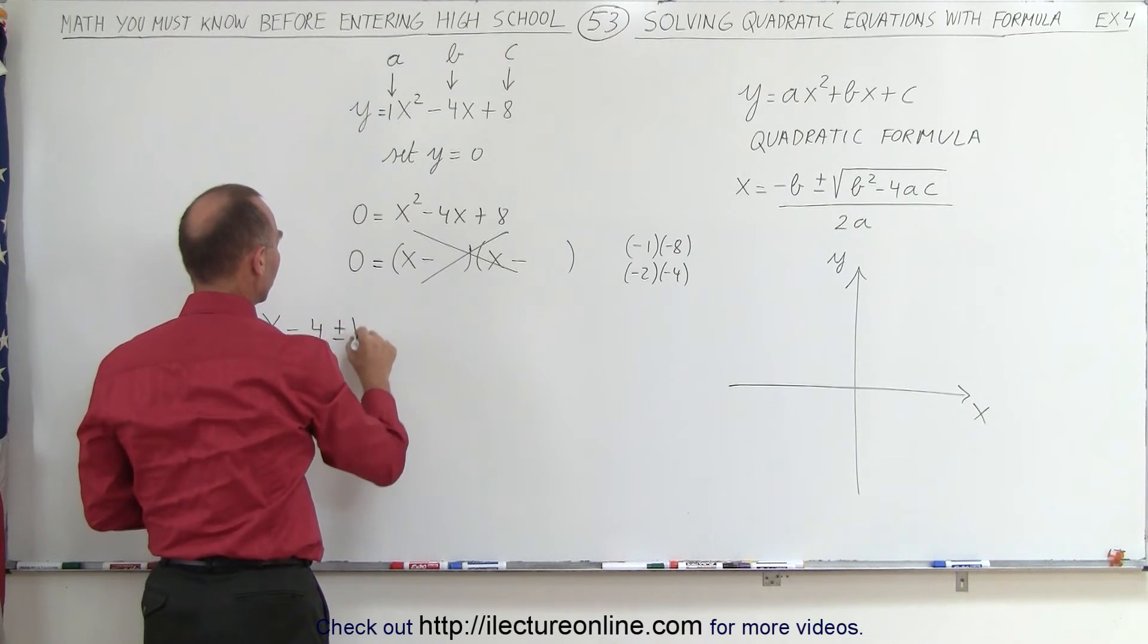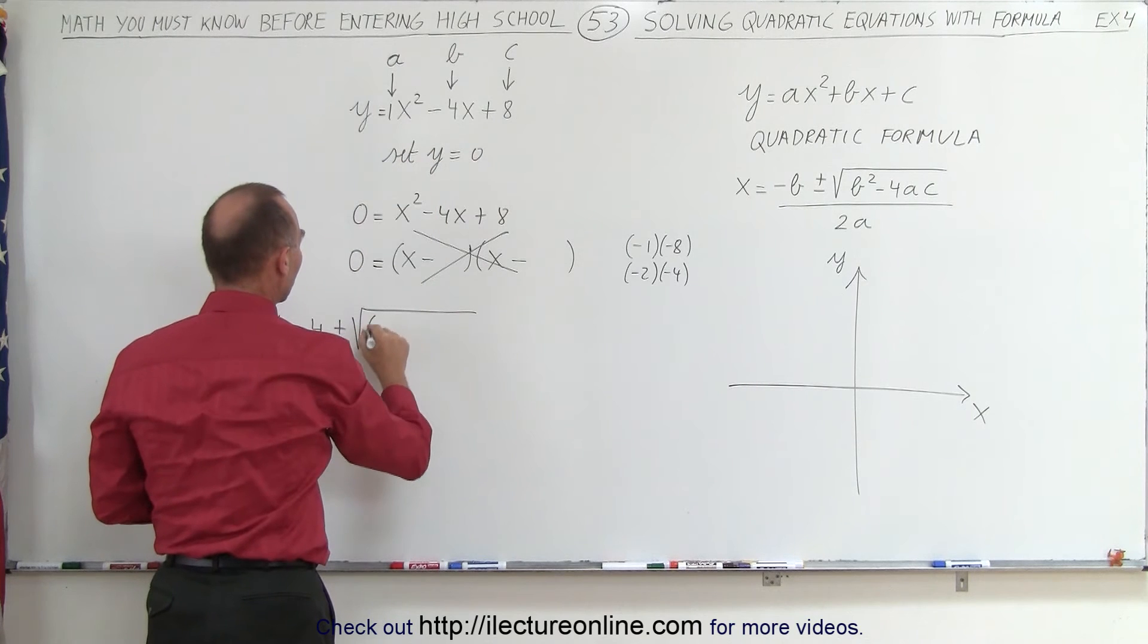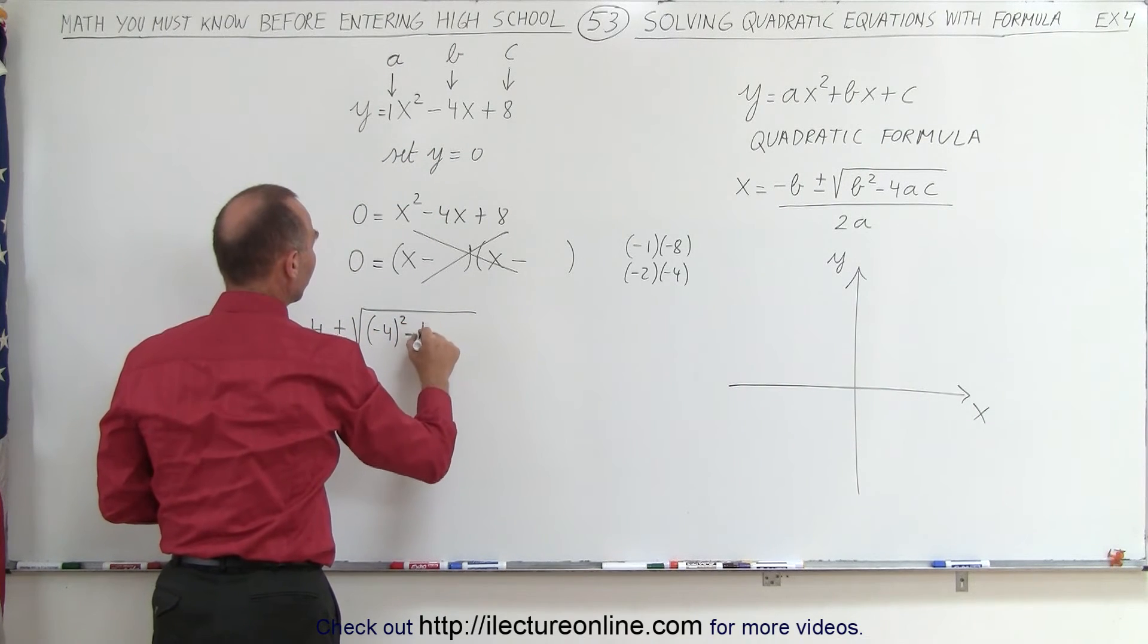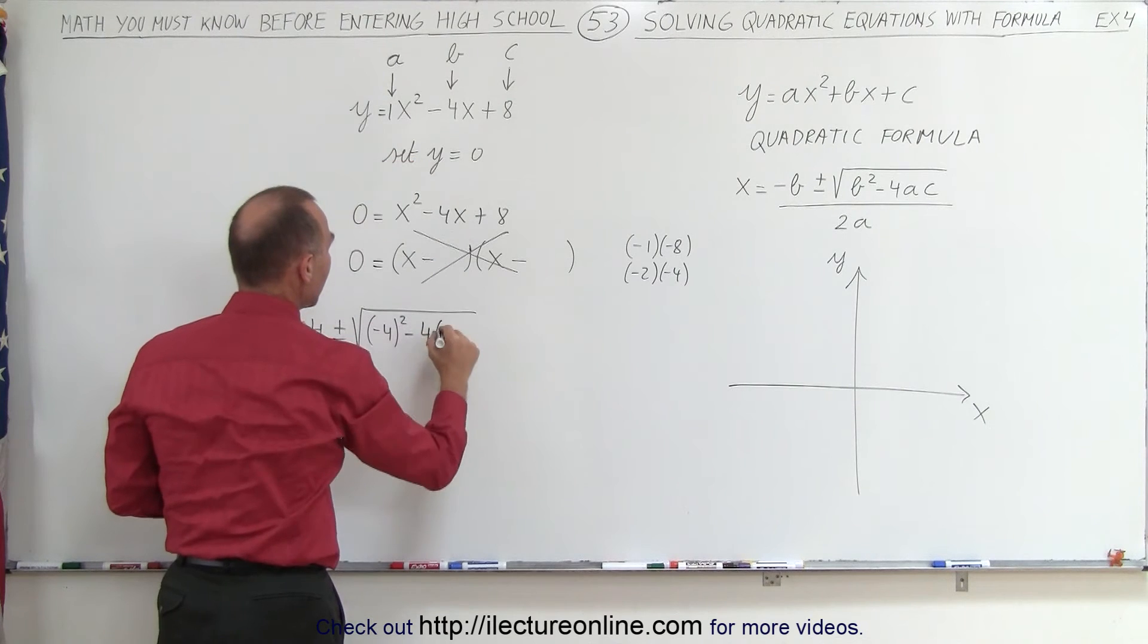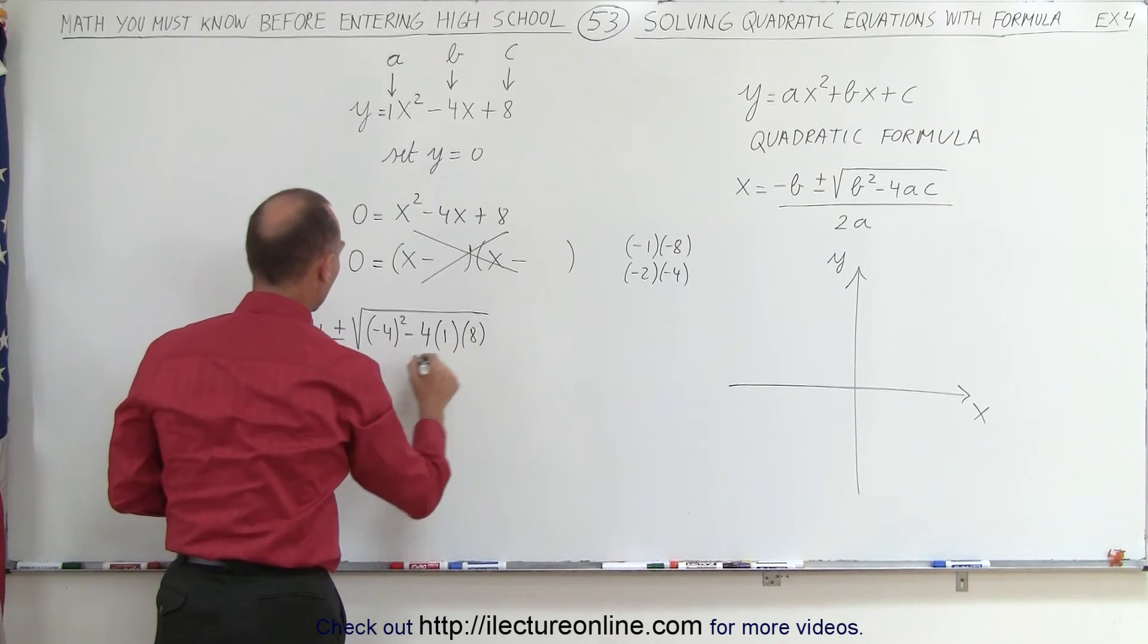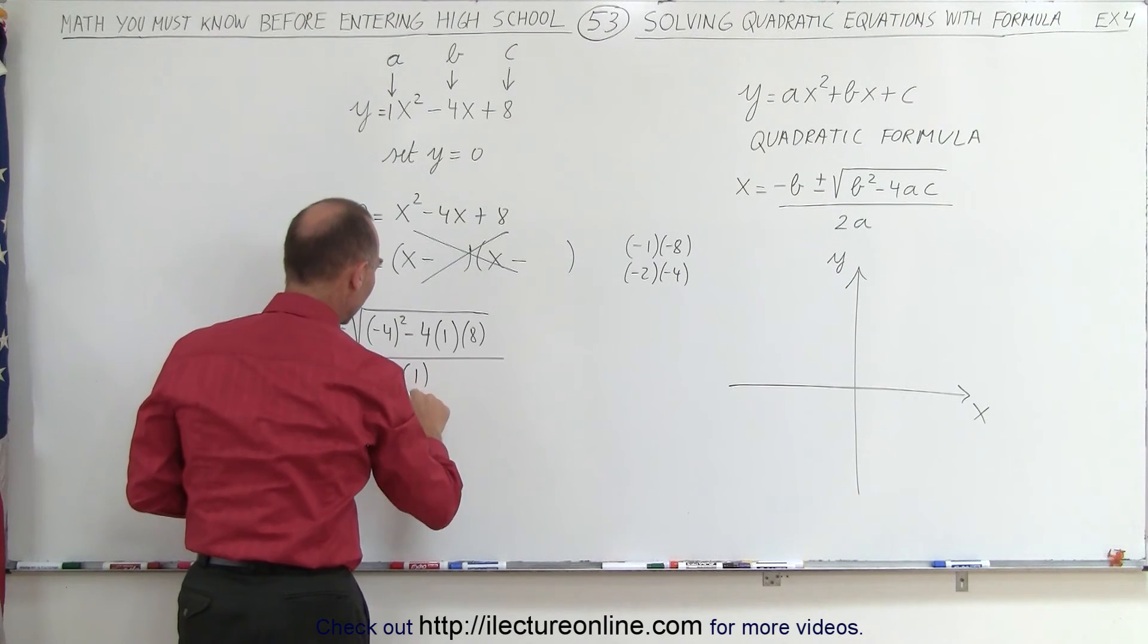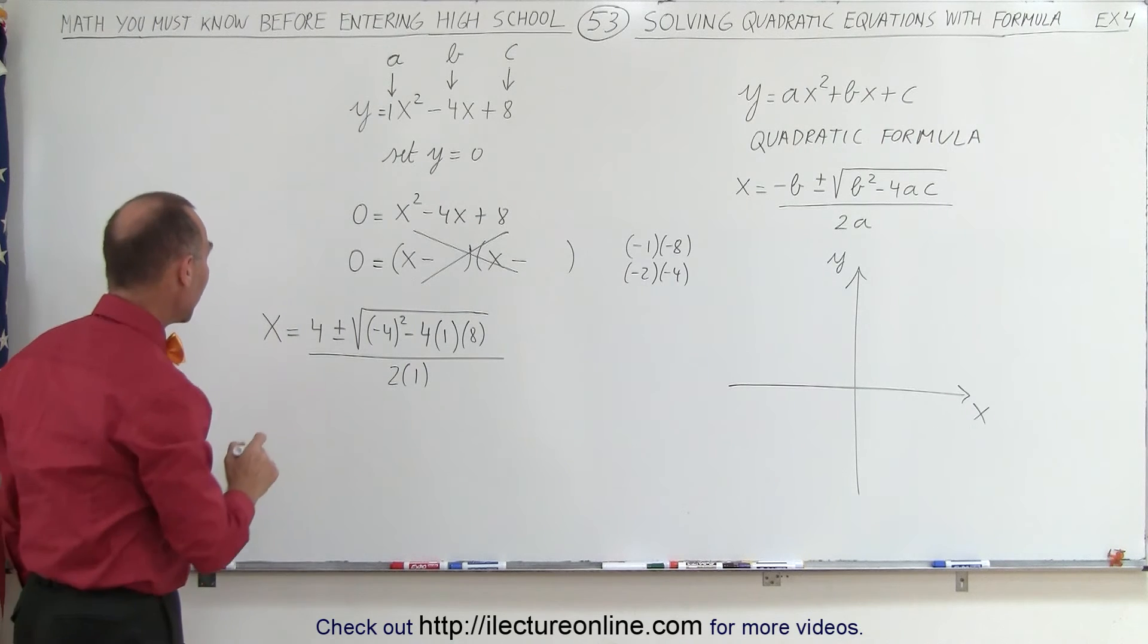Plus or minus the square root of b squared. That would be negative 4 squared, minus 4 times a, times c, which is 8, all divided by 2 times a. And a is, of course, 1. So let's simplify that, and see what we get.